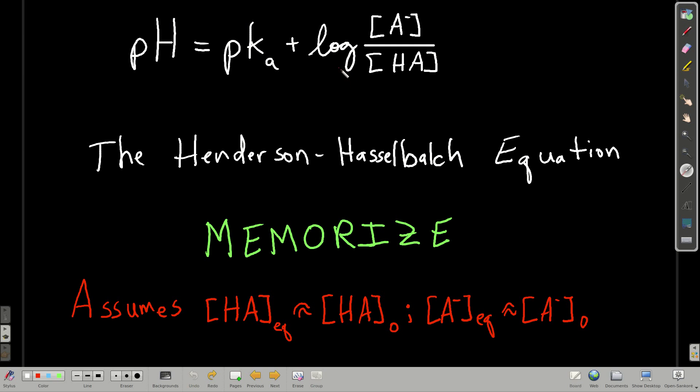The way we use this is we make up a solution that has a concentration of the conjugate base and the concentration of the weak acid. What we're assuming here is that the concentrations don't change appreciably from what we make up. In other words, we're neglecting x in the ice tables. And that's usually a good approximation, especially if we don't make these solutions too dilute, make them fairly concentrated. So this is what we're assuming here.